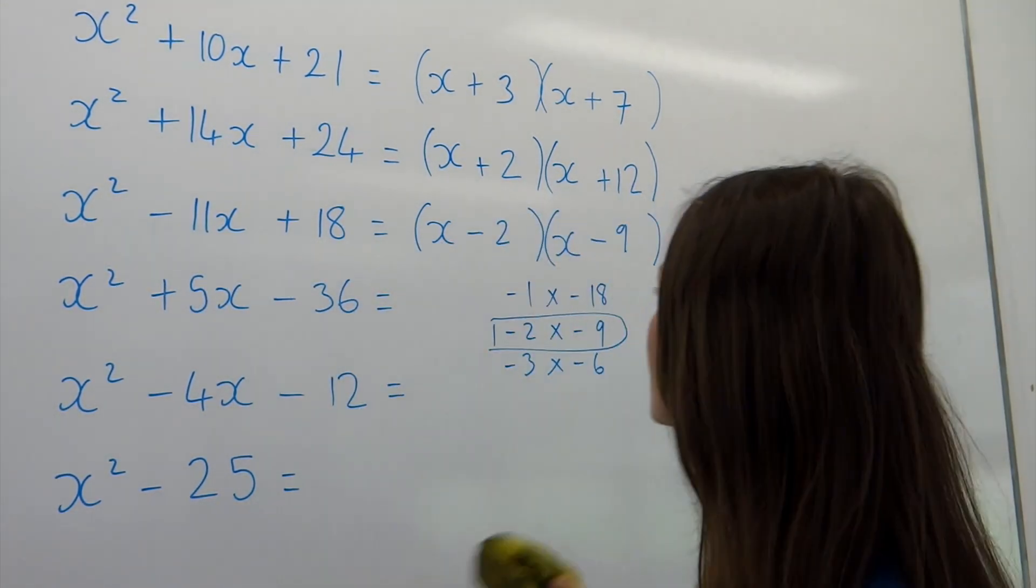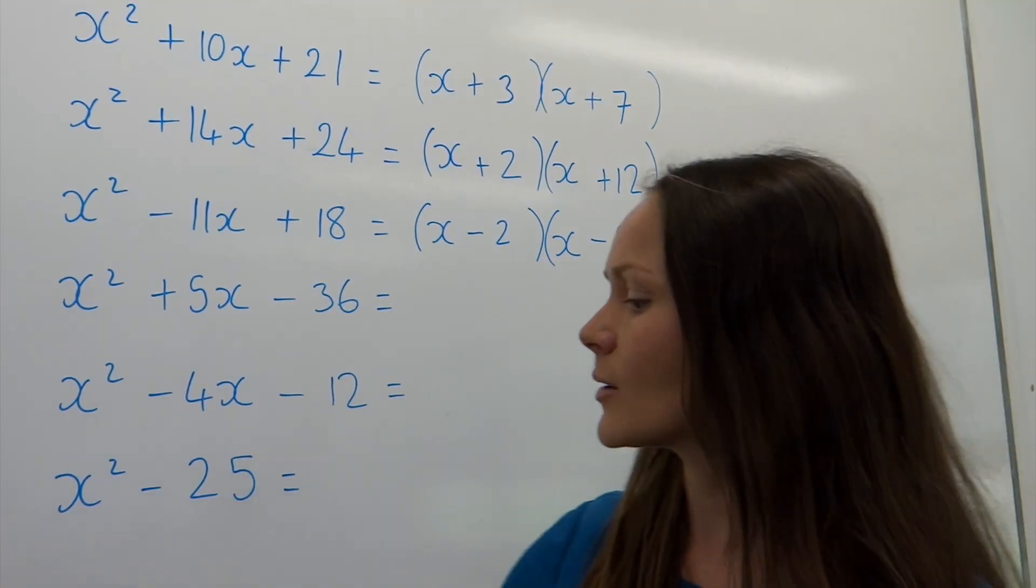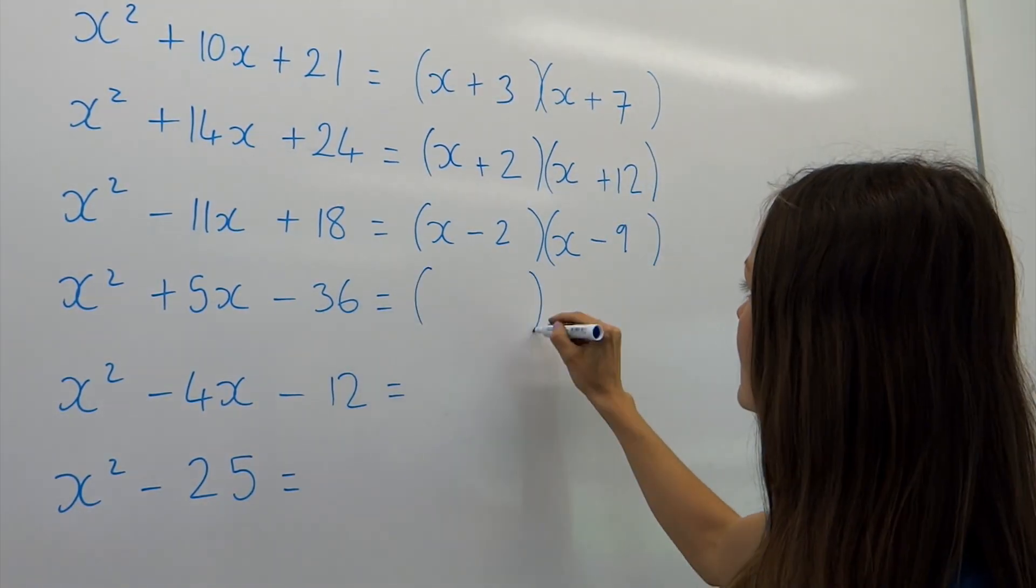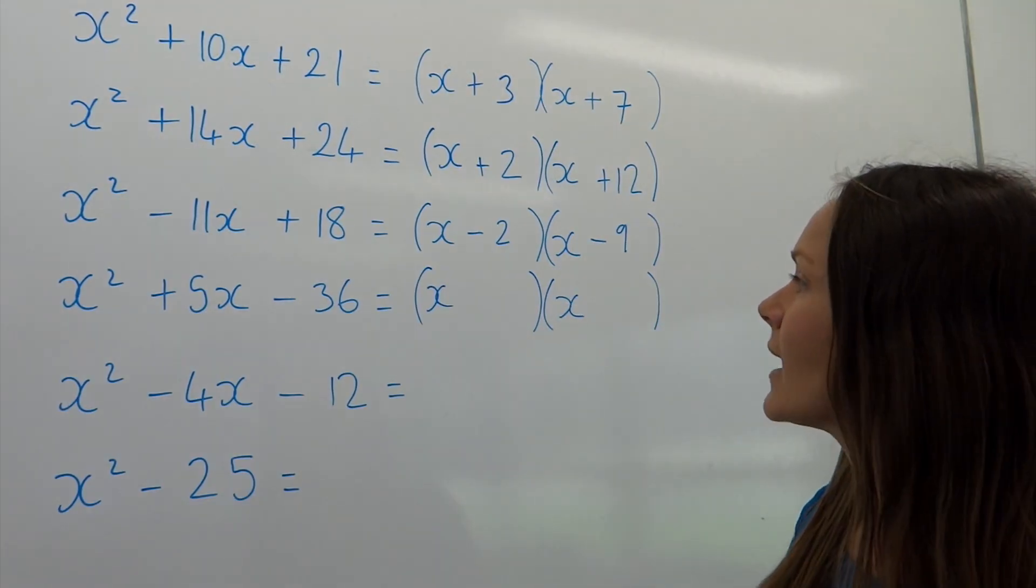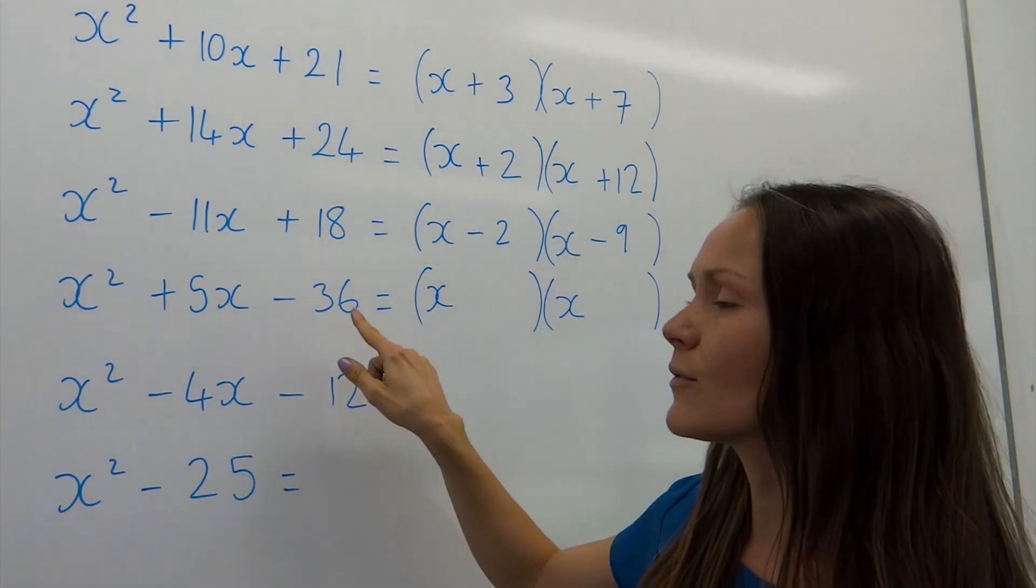Now, next example, number 4. So again, double set of brackets. You can fill in the x. Now, I need factors of negative 36.